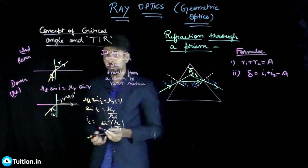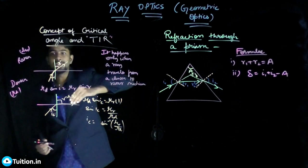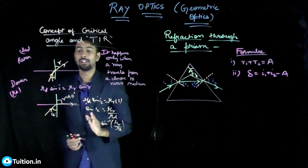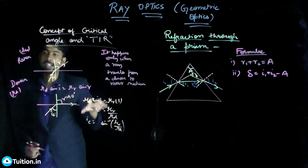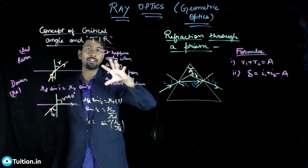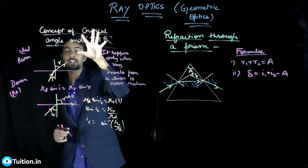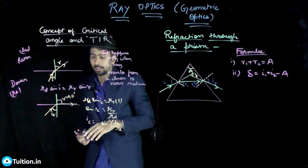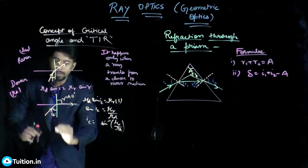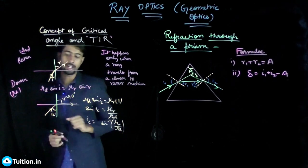If your ray was traveling from rarer to denser medium and you keep changing the angle, it will keep turning towards the normal — it will never bend away from the normal to reach 90°. That is why this phenomena is valid only when your ray travels from a denser medium to a rarer medium.